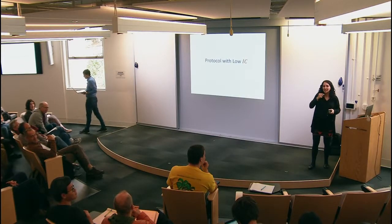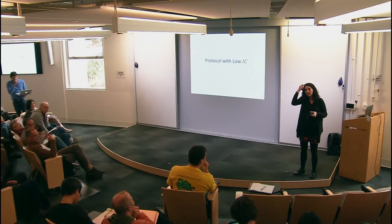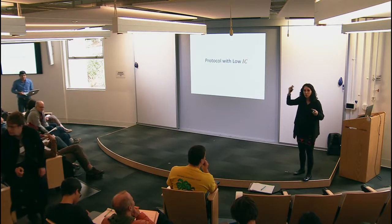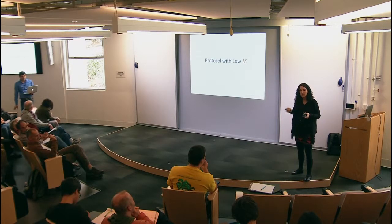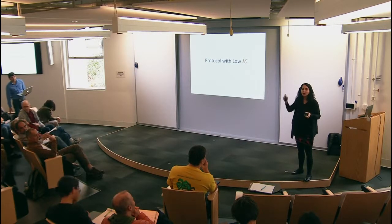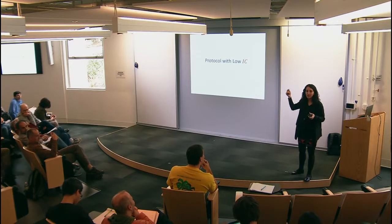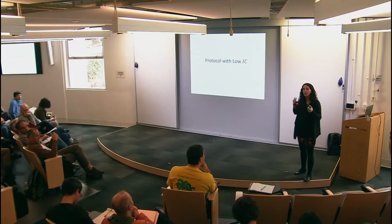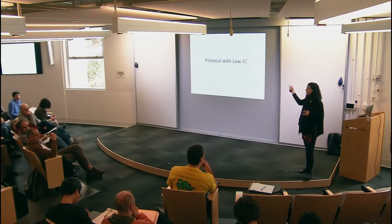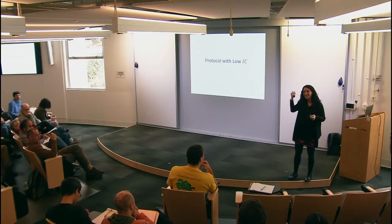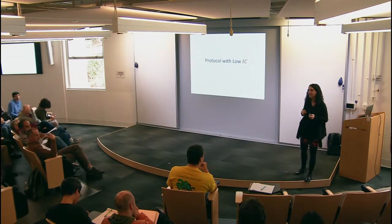In response to audience questions: for product distributions, strong direct sum doesn't fully hold, but you can compress down to information cost times log(communication complexity). So you get something close to strong direct sum but with a log(cc) factor. It remains open whether you can always compress everything to IC · log(cc).